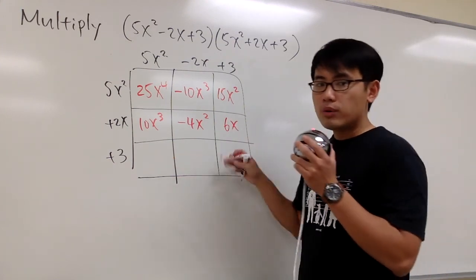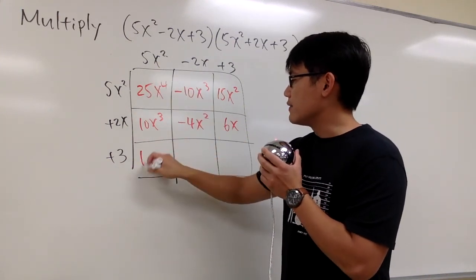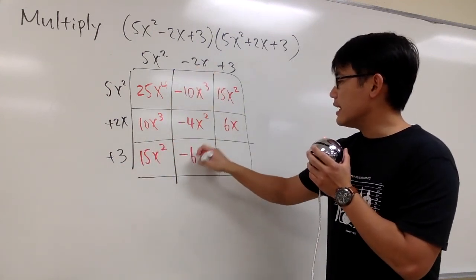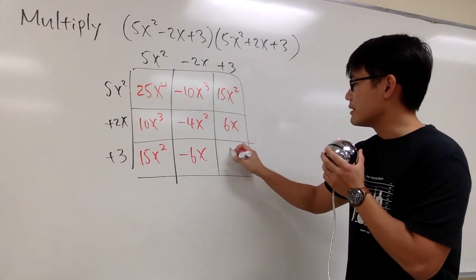And then for the last row, we have 3 times 5x². That's 15x². 3 times this is -6x. And then 3 times 3. We have plus 9.